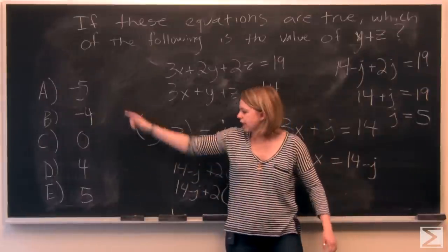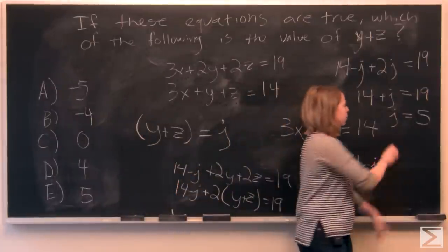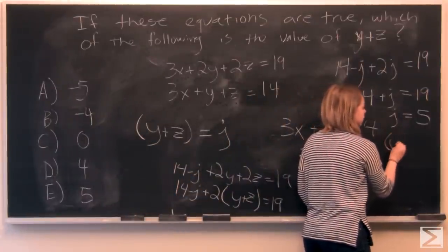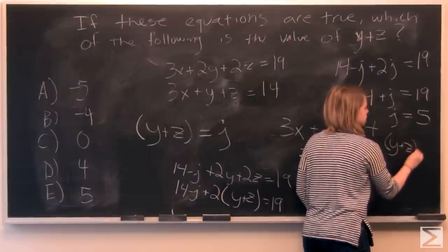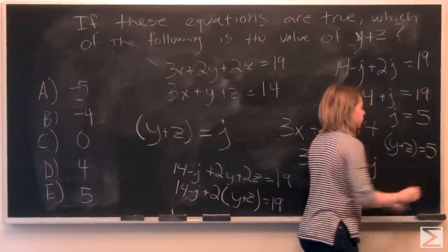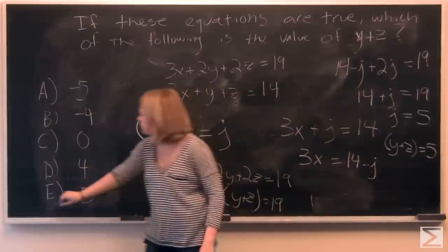Now this doesn't look like any of our answer choices. But remember that we're looking for j is equal to y plus z equals 5. And we'll find that our answer choice is E.